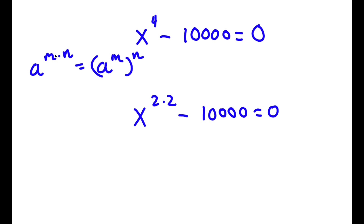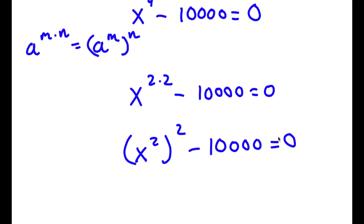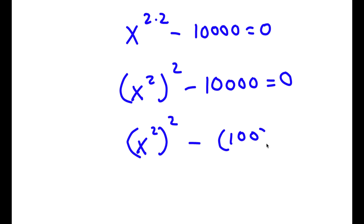Because this is in the form a to the power of m times n, I can rewrite this as a to the power of m to the power of n. So I'm going to rewrite this as x to the power of 2 to the power of 2, minus 10,000 is equal to 0. Now, 10,000 is the same thing as 100 squared. So now I have x squared to the power of 2 minus 100 squared is equal to 0.